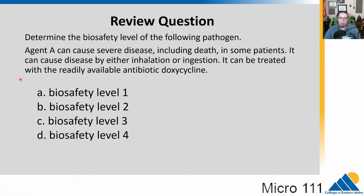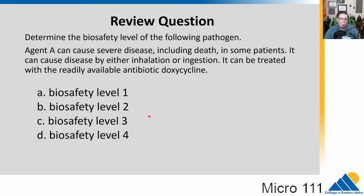We're going to finish up with chapters 2.5 and 2.6 — they're both rather short. Let's start with a review. Determine the biosafety level of the following pathogen: Agent A can cause severe disease including death in some patients. It can cause disease by either inhalation or ingestion, and it can be treated with a readily available antibiotic — doxycycline. Is it biosafety level one, two, three, or four?